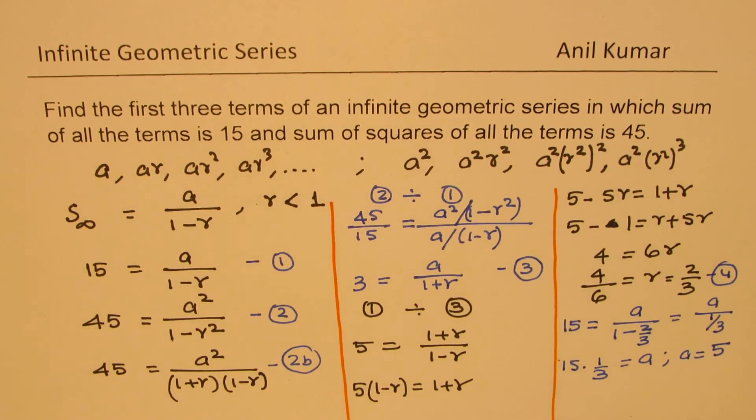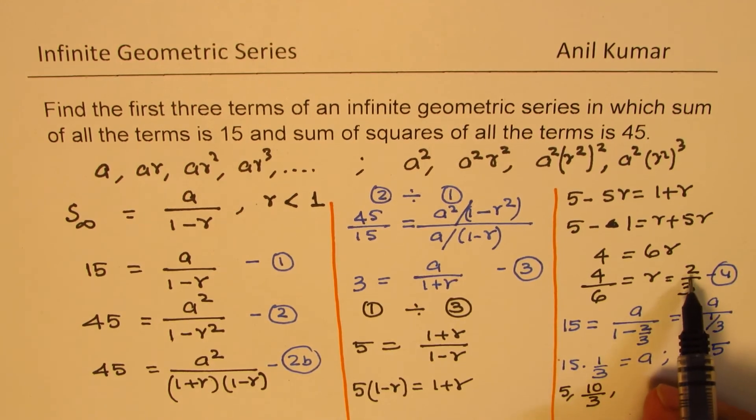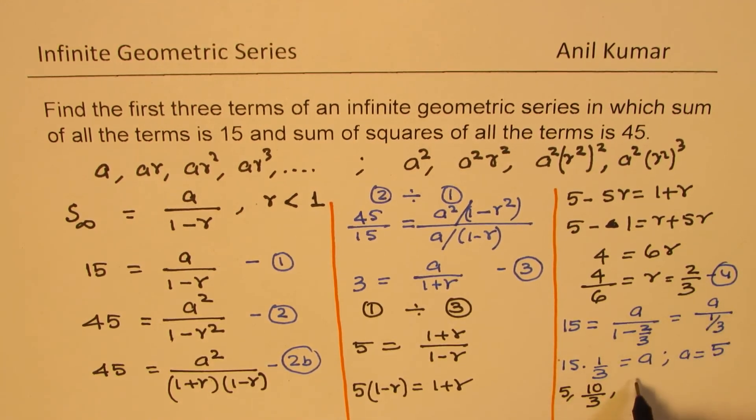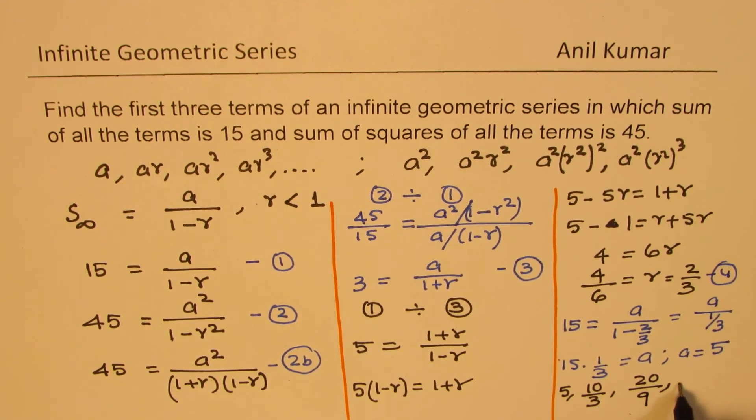So the first three terms will be 5, that is A, times AR. R is 2 over 3. The second is 10 over 3. And then again multiplying by 2 over 3, we get 20 over 9. So that is the first three terms of our infinite series.